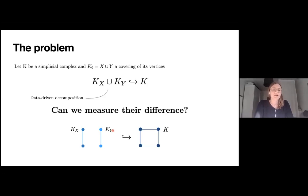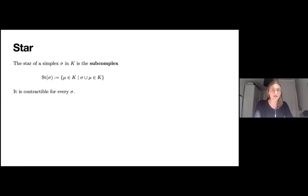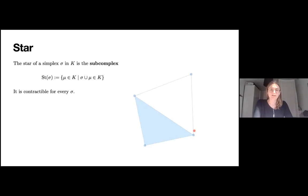Before going into the details of the problem, let me recall the definition of the star of a simplex, which might be slightly different from the one you are used to. For us, the star of a simplex sigma in a simplicial complex is the collection of simplices in K that, together with sigma, still form a simplex in K. It turns out that the star of a simplex is always a contractible sub-complex of K. For example, take this simplicial complex obtained by two triangles, one empty and one full, sharing one edge. If we take sigma as this shared edge, the star of sigma will be the full triangle together with all its sub-simplices.